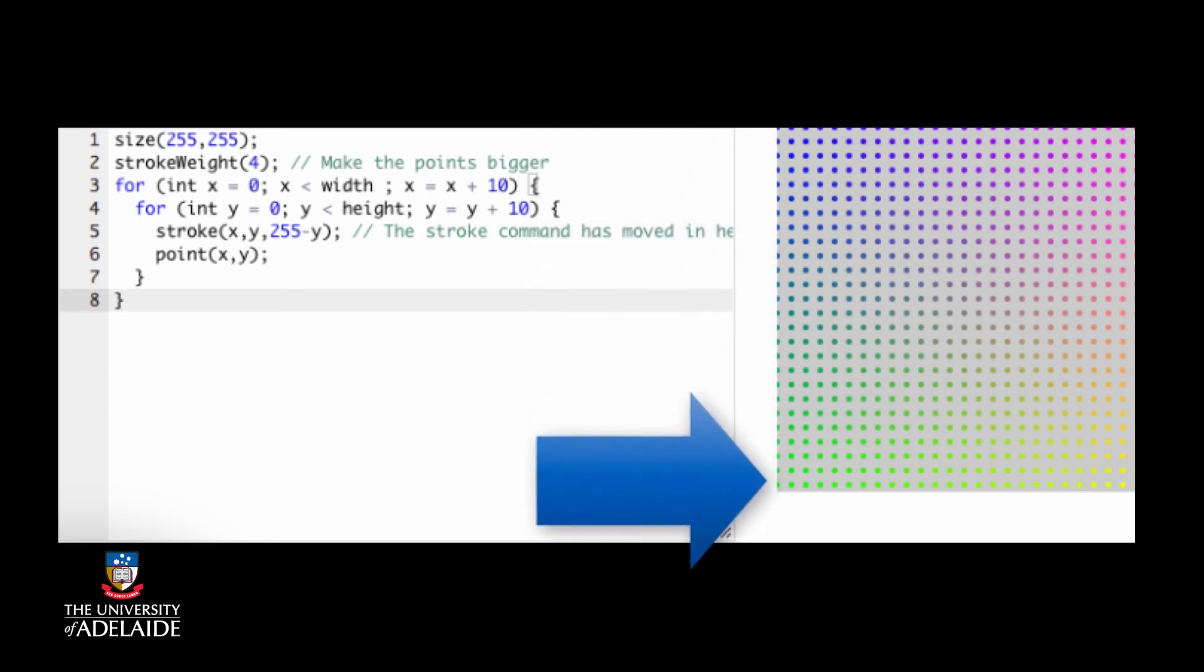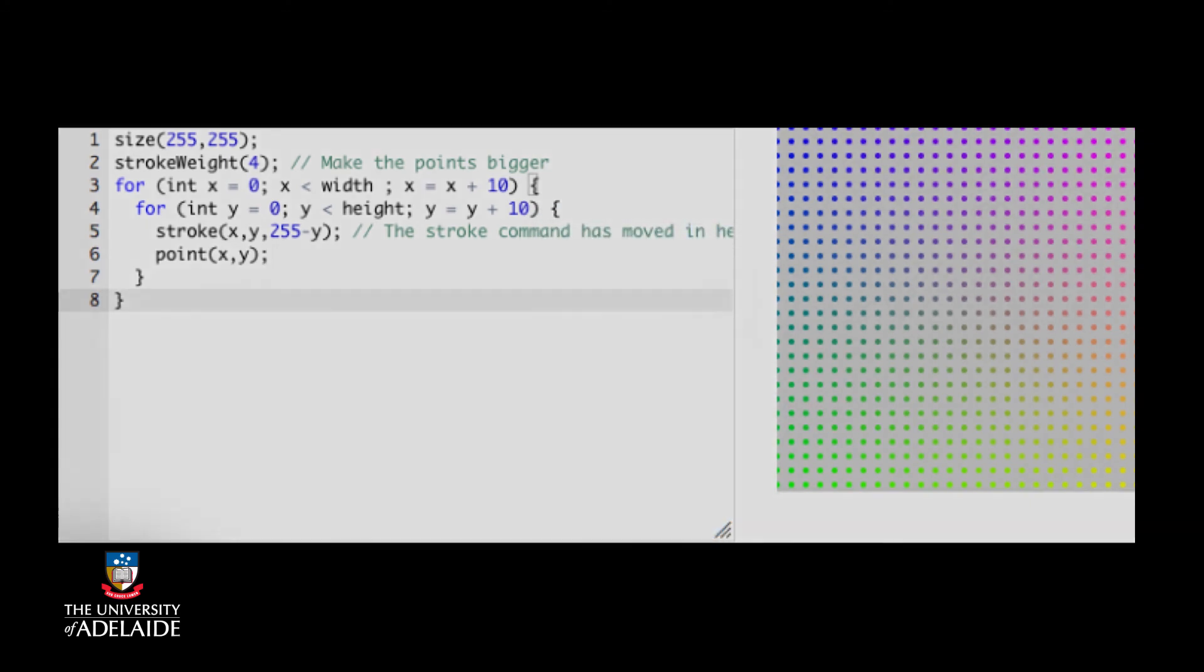Don't forget that in processing, combining red and green in a stroke statement will give you yellow, which is why where x and y are both at their largest, we see that yellow corner. But we aren't restricted to looking at color alone. In the next section, we'll look at changing two different elements of your pictures, color and size.